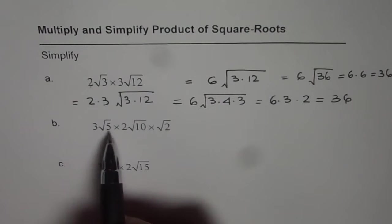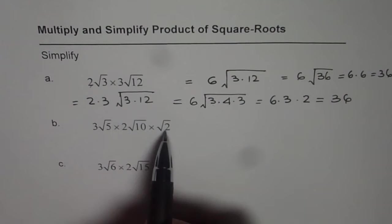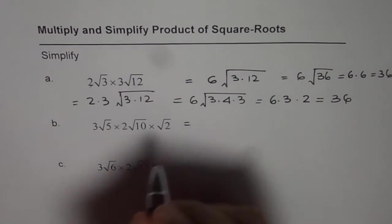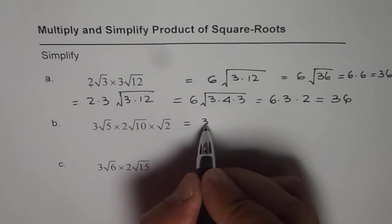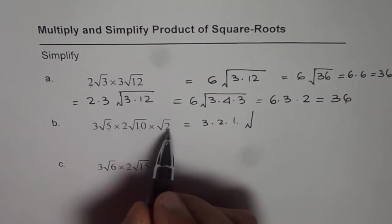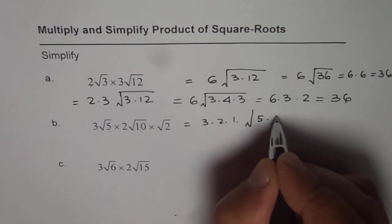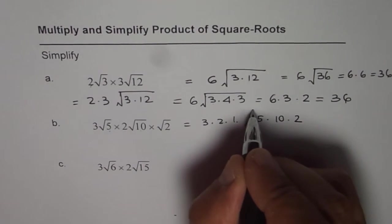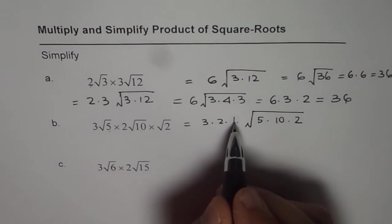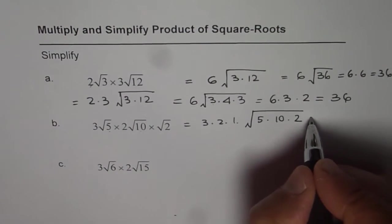Now we have 3 radicals: 3√5 times 2√10 times √2. First multiply the numbers outside, which are 3, 2 and 1. So let me write 3 times 2 times 1. And within square root we have 5 times 10 times 2. That is what we have.